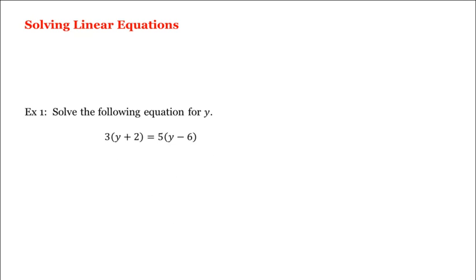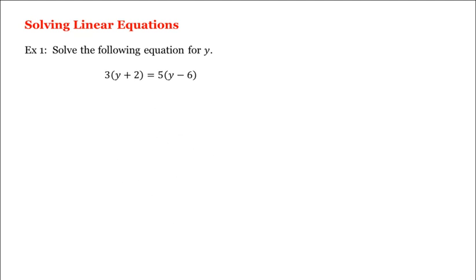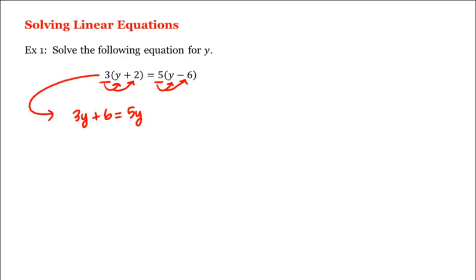Let's look at solving linear equations. For example, let's solve the following equation for y. The first thing we'll do is distribute the 3 to both of these two terms as well as the 5 to these two terms, which gives us 3 times y plus 6 is equal to 5 times y minus 30.